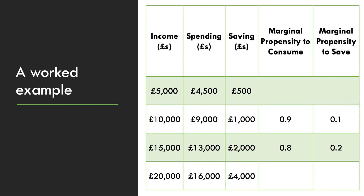For the next change in income, income rises again by £5,000 to £20,000. Yes, we're spending more — we're spending £3,000 of that extra, which is a marginal propensity to consume of 0.6. And the marginal propensity to save must always equal one when combined with the MPC.